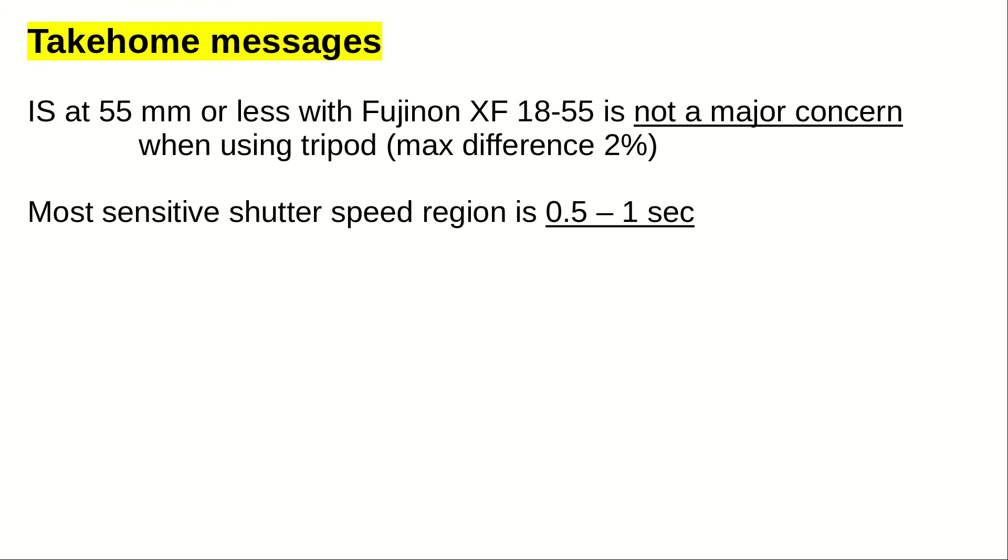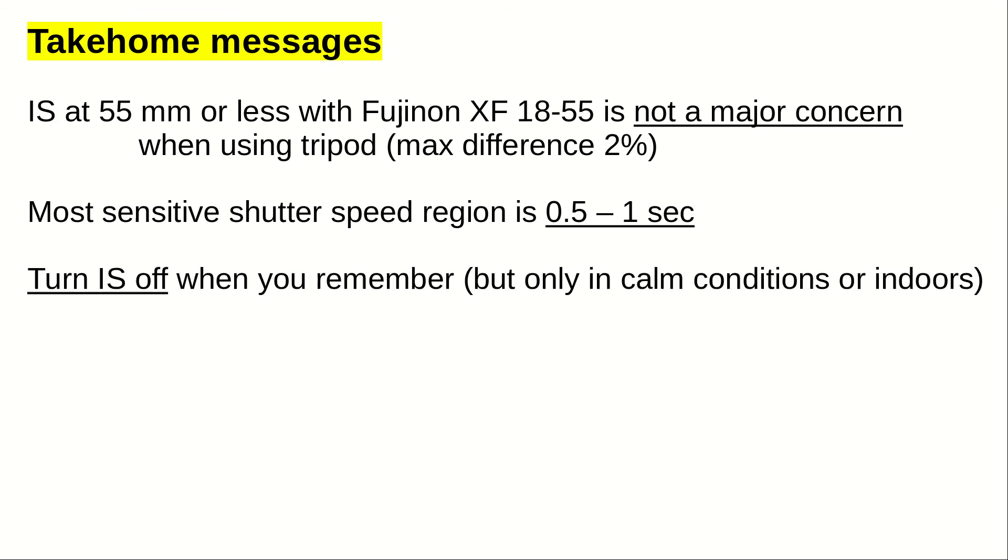It makes most sense to turn off IS between shutter speeds of 0.5 to 1 second. Switch the IS off if you can and remember to. However, do it only if you are certain that you are not shaking the camera and there is absolutely no wind, and you are using remote shutter release or timer release. In other situations, leave it switched on.